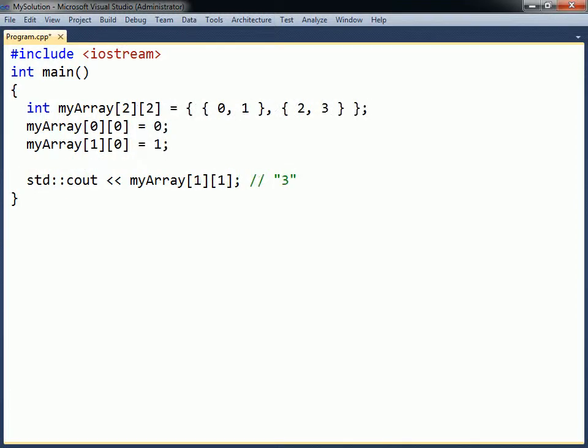Arrays can be made multidimensional by adding more sets of square brackets. As with single-dimensional arrays, they can either be filled in one at a time, or all at once during the declaration.